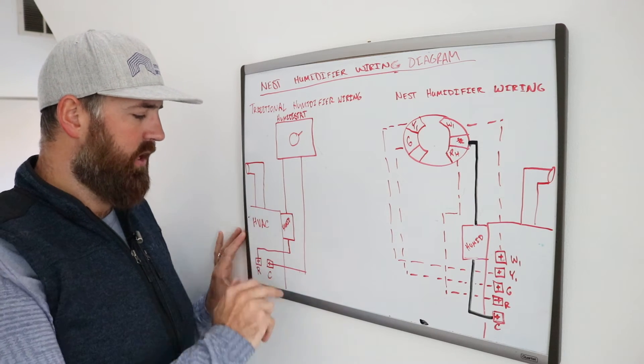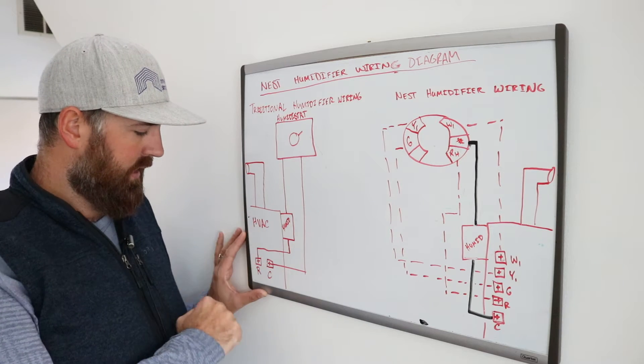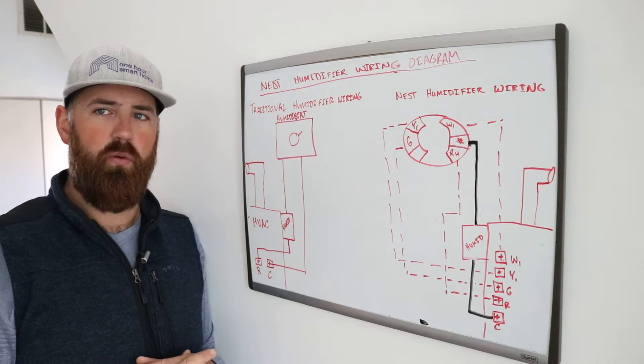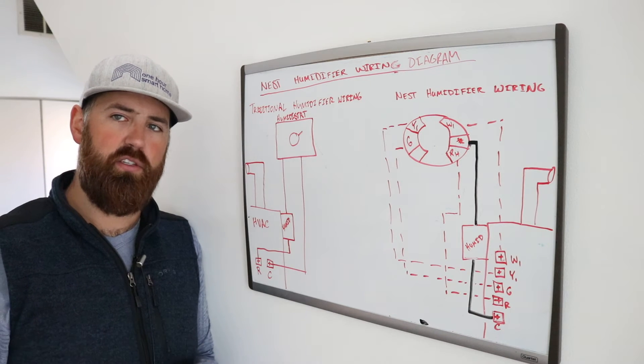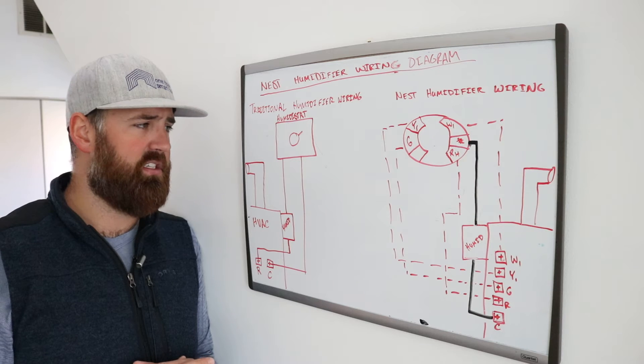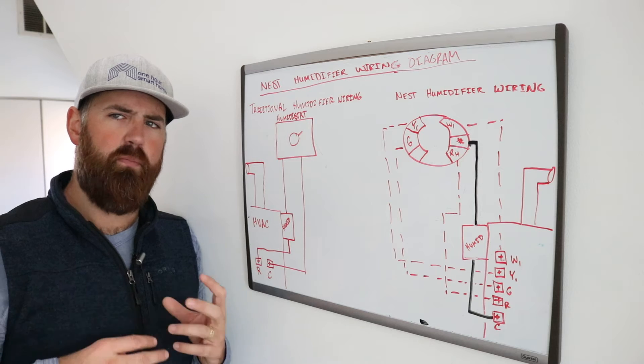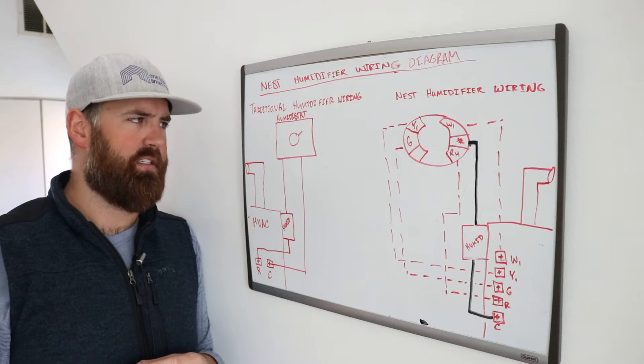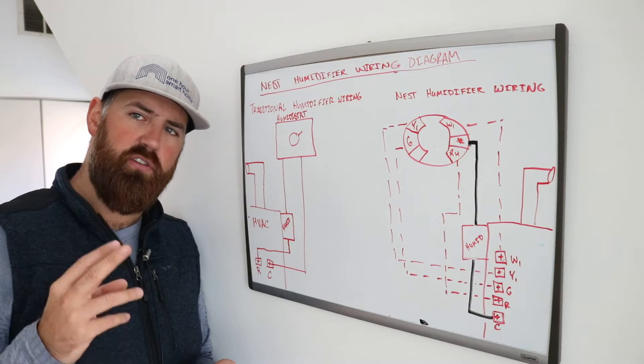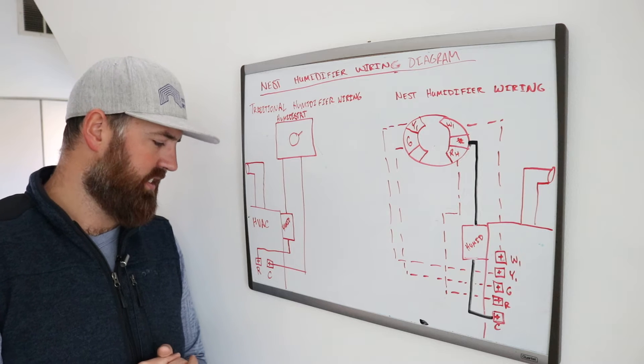So you've got your HVAC system here, I drew all this out, you've got your humidifier, that's this little block here. And how a humidifier works is that usually it's powered by 120 volts, it's got a little plug that plugs into an outlet near your HVAC system and that runs the fan on the humidifier if it's forced air or can power some of the other devices and things inside the humidifier. But it is activated by low voltage, 24 volts, typically from a humidistat or from your existing thermostat.